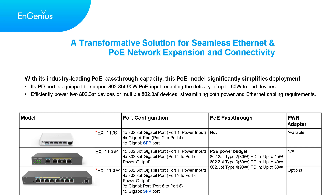With an 802.3 AT 30-watt PoE injector, the total PoE budget is up to 15 watts. With an 802.3 BT 60-watt PoE injector, the total PoE budget increases to 40 watts. Using the 802.3 BT 90-watt PoE injector allows for a total PoE budget of up to 60 watts. The solutions support up to 60-watt PoE budget, connecting 3 to 4 powered devices, streamlining the installation process, and reducing labor hours and component costs.